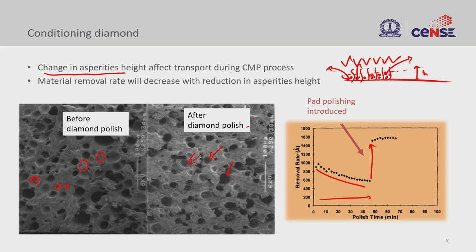As polishing time increases, removal rate decreases because the abrasive nature of the pad is getting reduced. Once you introduce the conditioning step, removal rate improves because the texturing height increases and slurry transport becomes effective — the pad is not smooth anymore. This is analogous to sandpaper: when sanding rust from an iron pipe, you accumulate deposits and lose effectiveness. Tapping the sandpaper removes those deposits and makes it efficient again. This is the action of conditioning — bringing the pad back to the condition that increases removal rate.